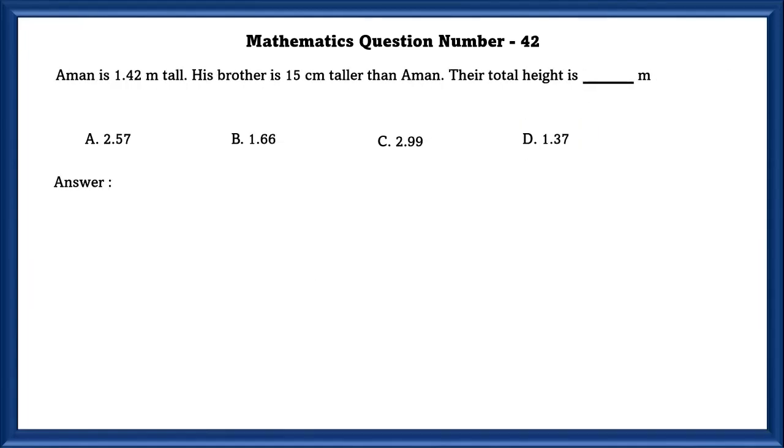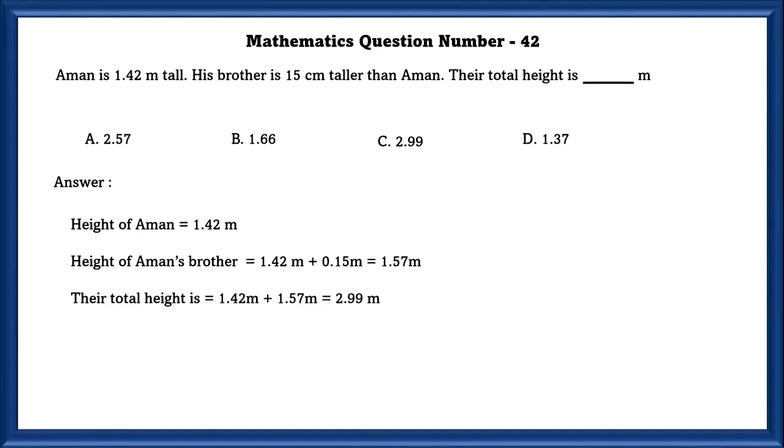Mathematics question number 42. Amman is 1.42 meters tall. His brother is 15 cm taller than Amman. Find their total height in meters. Height of Amman is 1.42 meters. Height of Amman's brother is equal to 1.42 meter plus 0.15 meter, which is equal to 1.57 meter. Total height is equal to 1.42 meter plus 1.57 meter, which is equal to 2.99 meter.